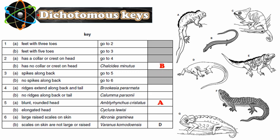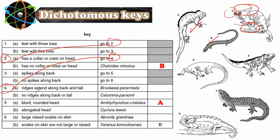Now let's go to animal C. It has feet with three toes — yes, you can see it has three toes. Go to question two. Question two: has a collar or crest on head? Yes, this is the collar on the head. Go to question four: ridges extended along back and tail — does it have ridges? No, it has nothing. No ridges along back or tail. The name of this animal is Calumma (column person). We write number C here.